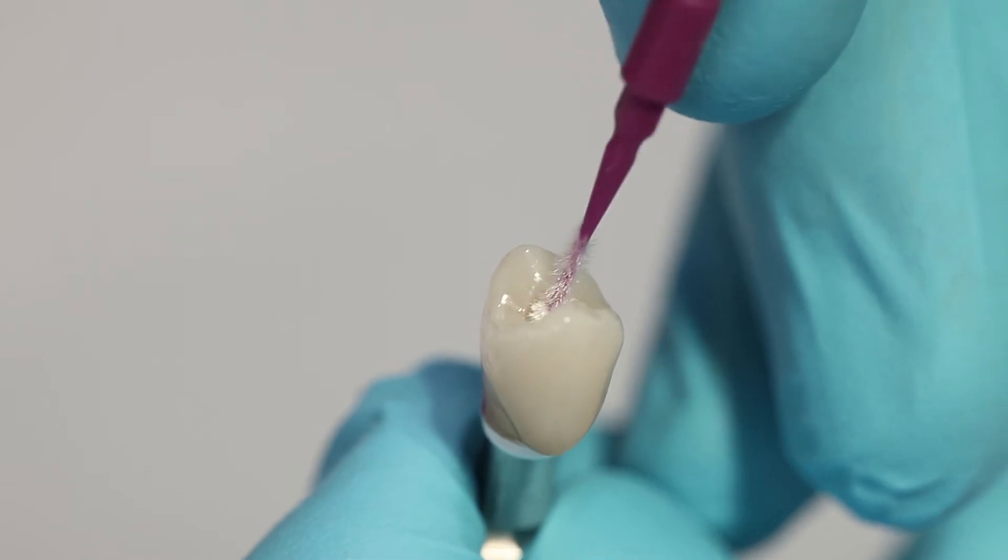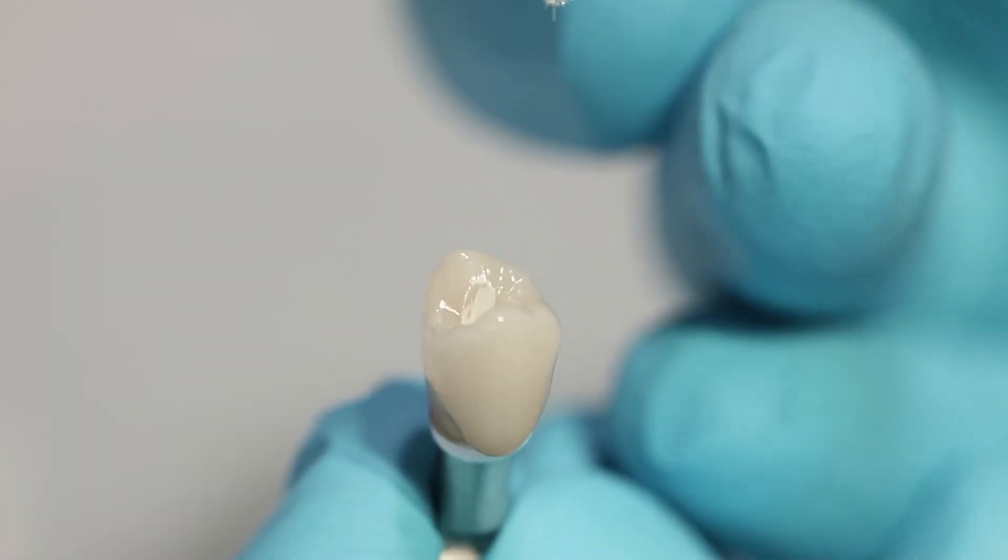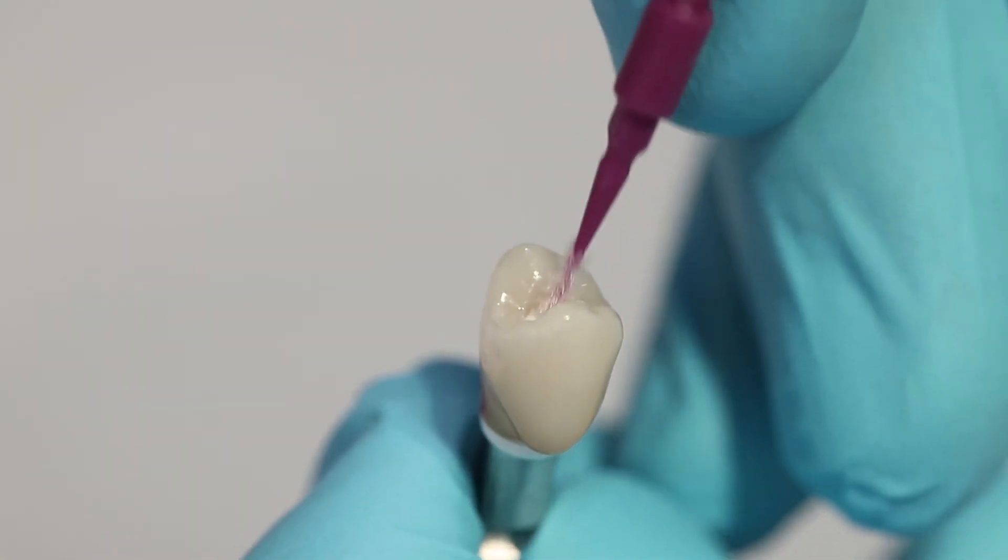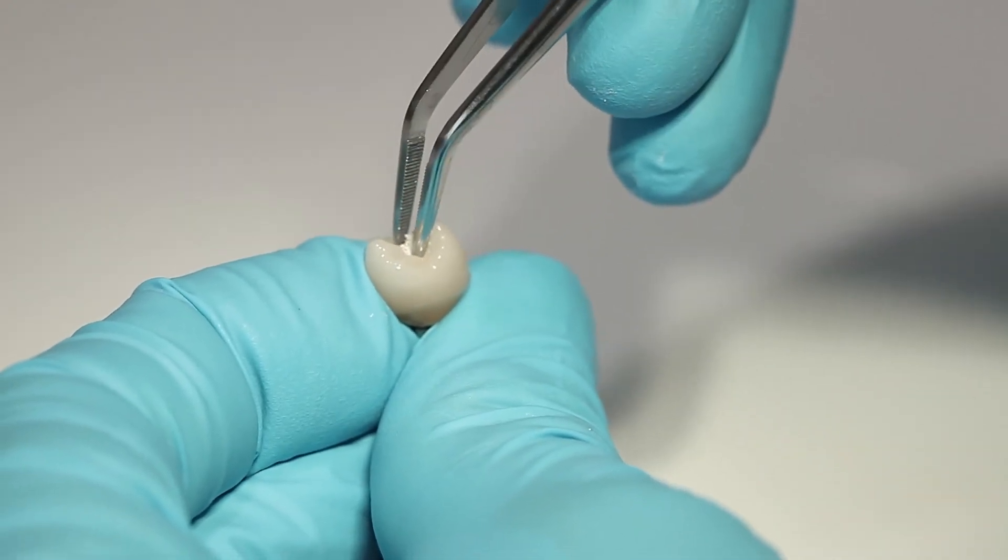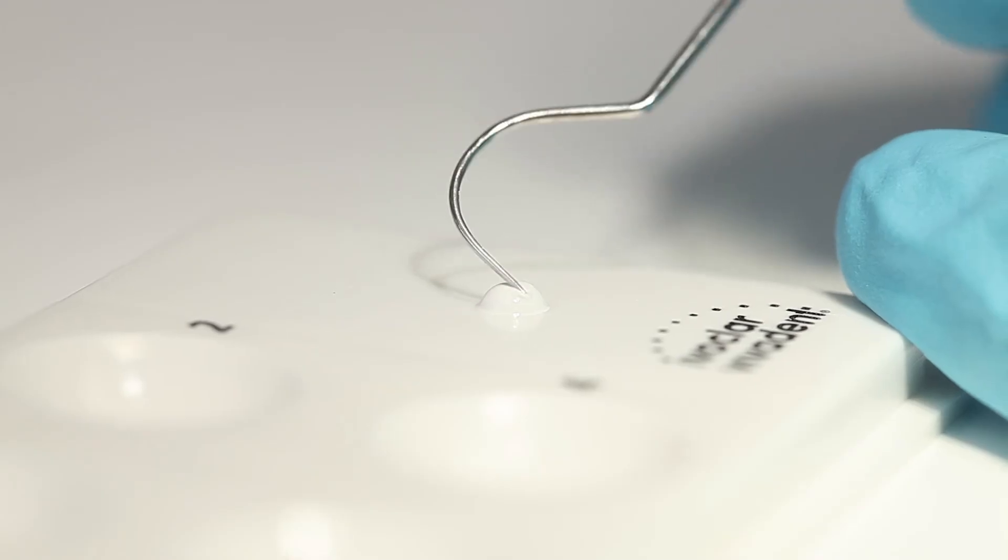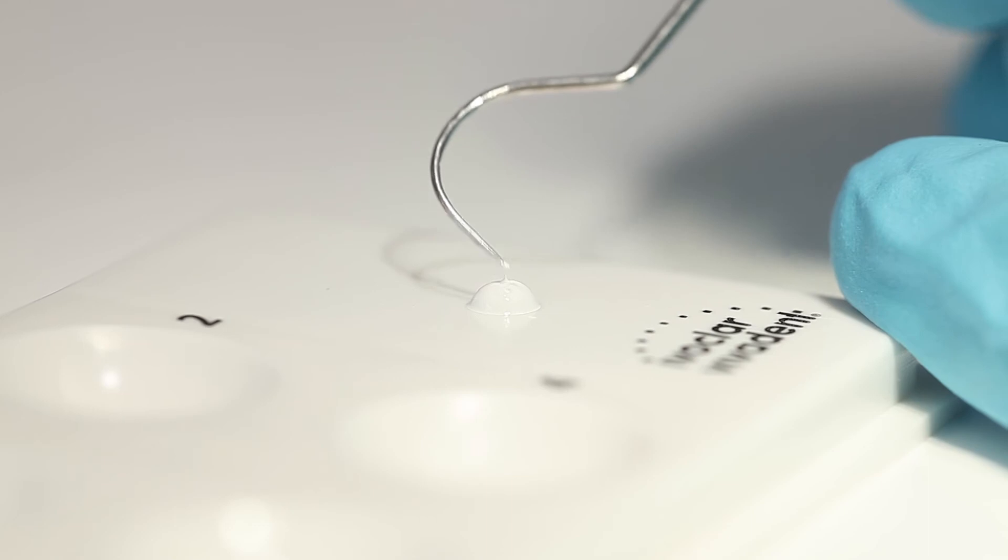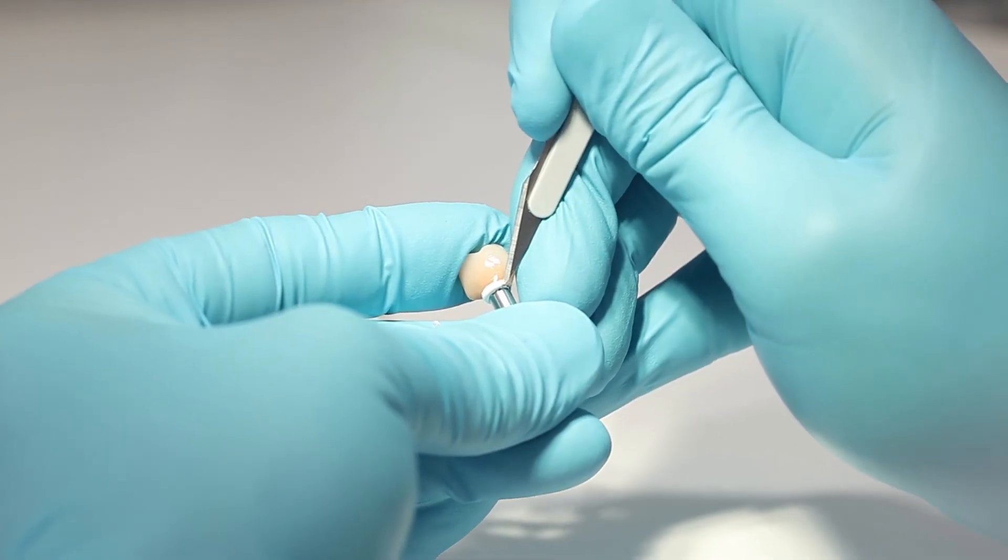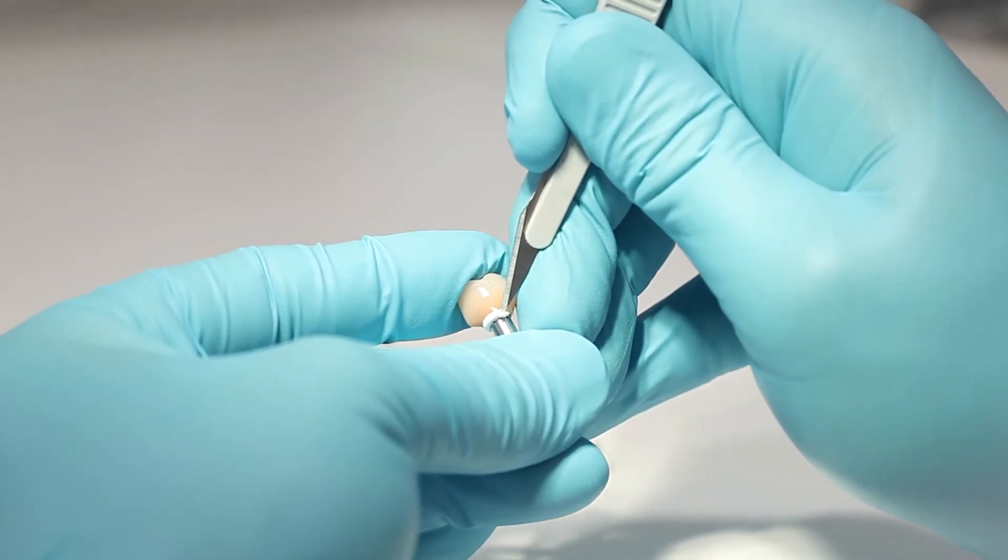Carefully remove excess multi-link hybrid abutment from the screw channel with a micro-brush or brush using rotary movements. Now carefully remove the foam pellet from the screw channel. Remove circumferential excess cement only after the initial setting phase, which is 2-3 minutes after mixing.